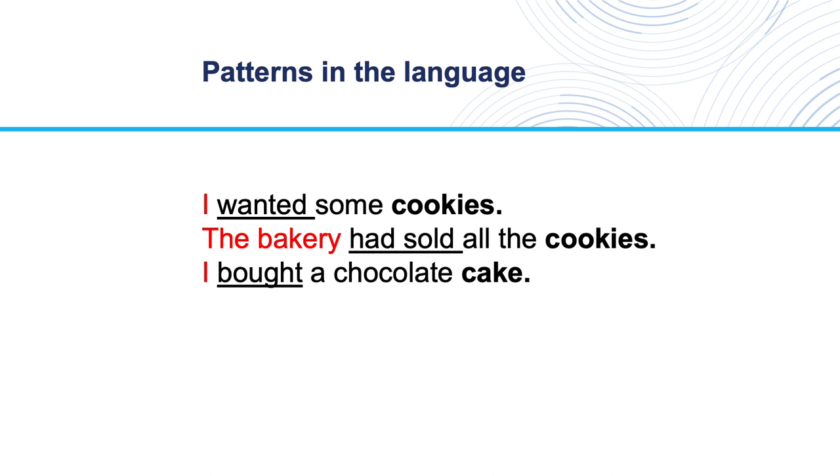So, the basic pattern is agent, verb, noun. That description for those three sentences is the start of the grammar. It's obviously a simple grammar — it doesn't even account for all of the words in all of those sentences — but it shows what we mean by writing a grammar. It might also show why Professor Gray thought that writing a grammar was fun when she was in high school.